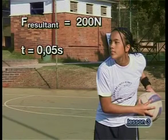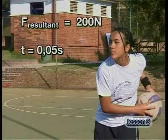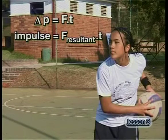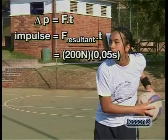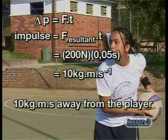The ball's change in momentum is minus 10 kilogram meters per second, or 10 kilogram meters per second away from her. If the resultant force on the ball is 200 newtons away from the player and the time taken for the ball to slow down from 20 meters per second to zero is 0.05 seconds, we can calculate the impulse using: change in momentum equals force times time. The impulse is 200 newtons times 0.05 seconds, giving 10 kilogram meters per second away from the player. The change in momentum of the ball is the same as the impulse on the ball.